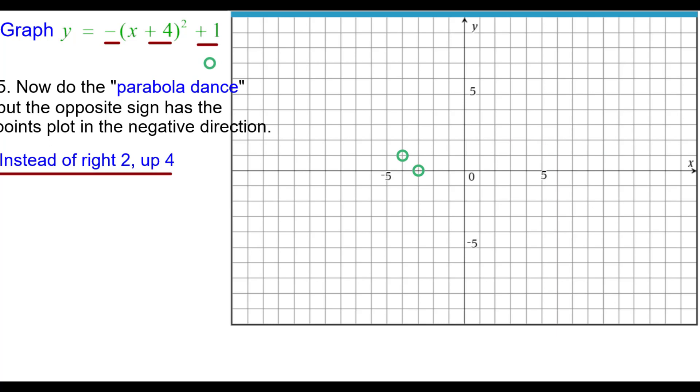Instead of right 2 up 4, it will be right 2 down 4. Instead of right 3 up 9, right 3 down 9. Again, negative direction because of the opposite sign.